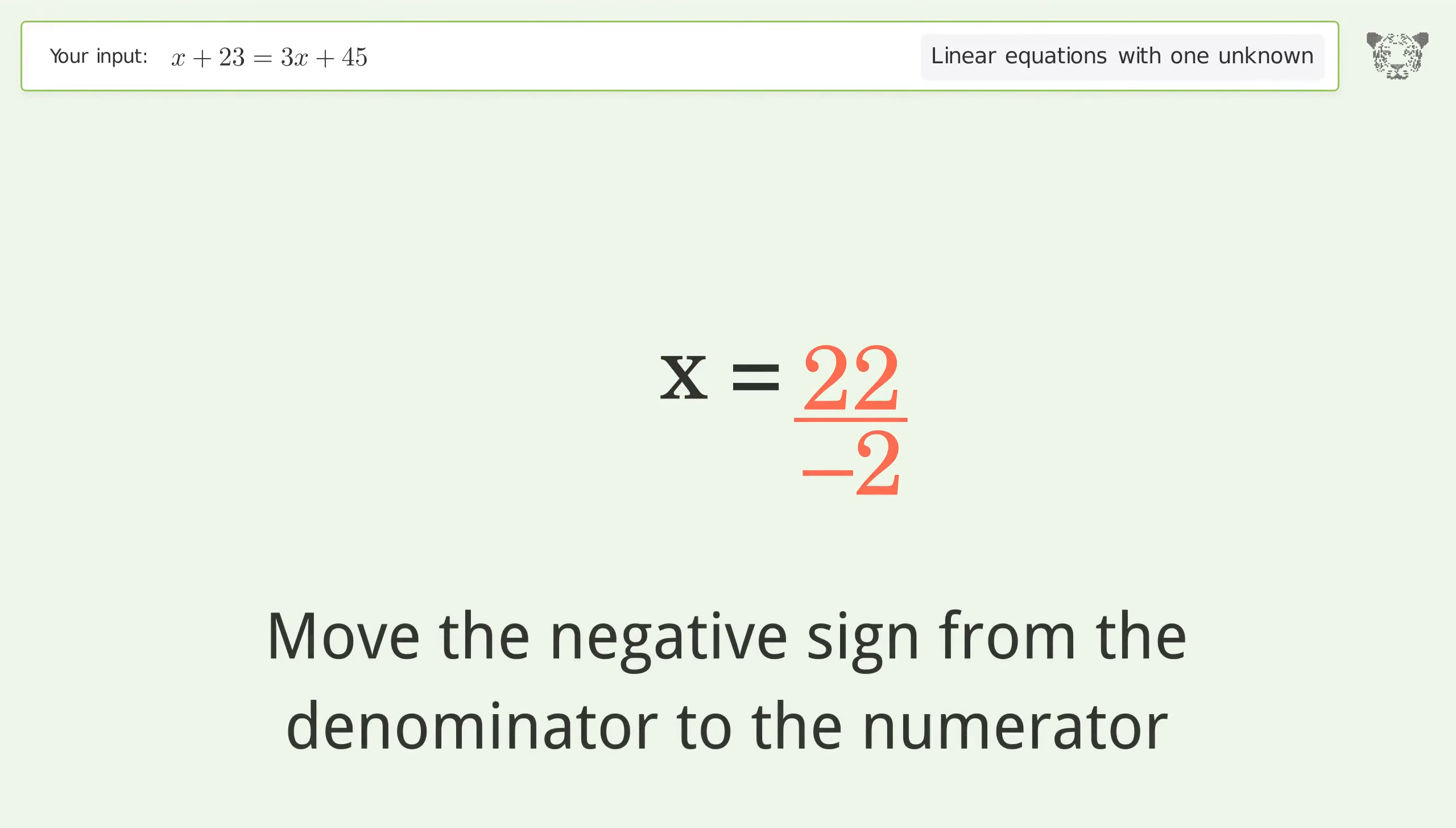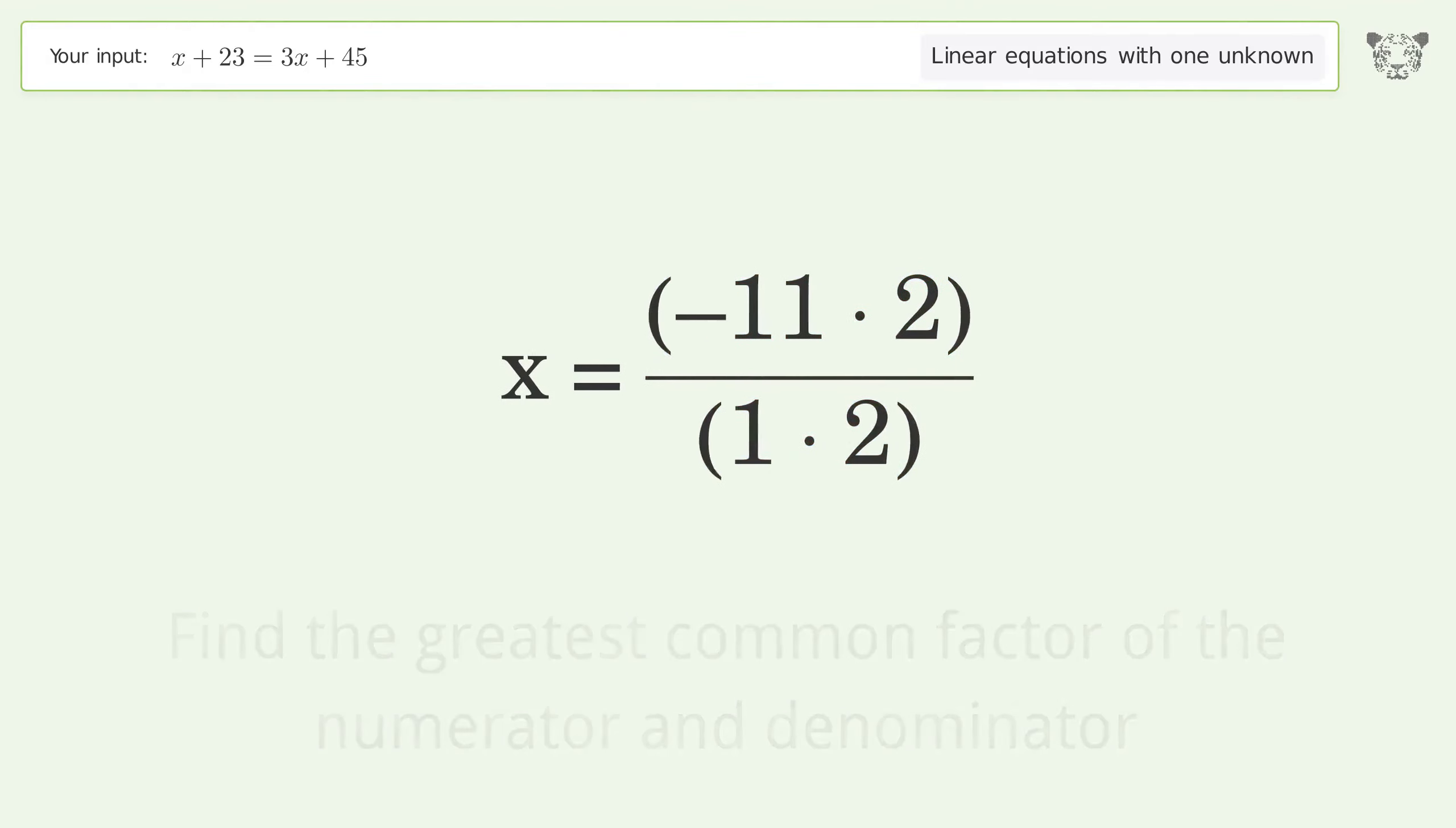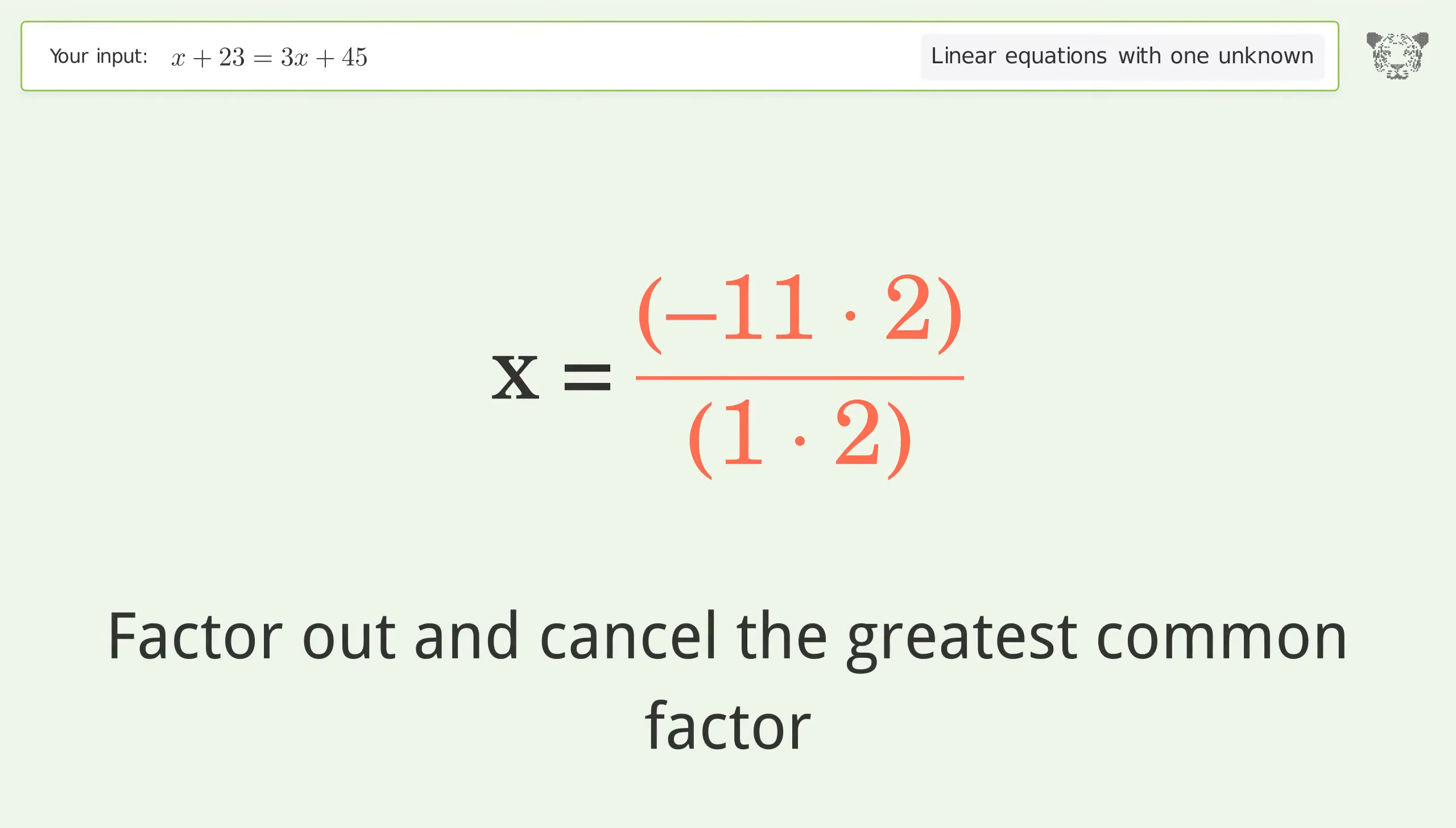Move the negative sign from the denominator to the numerator. Find the greatest common factor of the numerator and denominator. Factor out and cancel the greatest common factor.